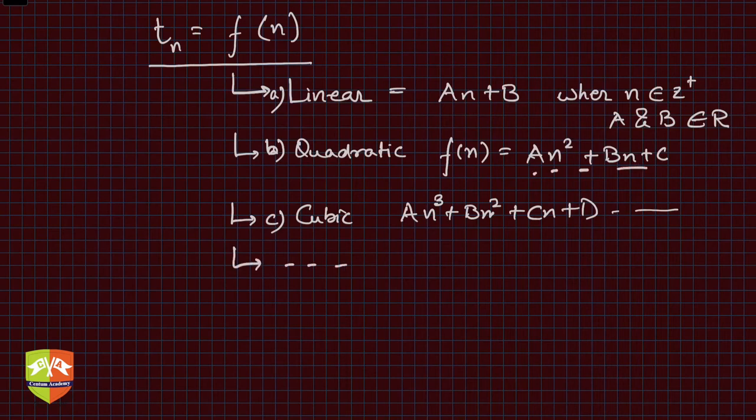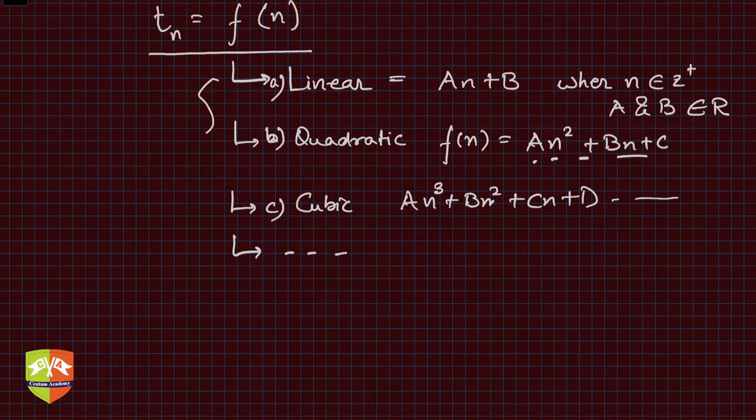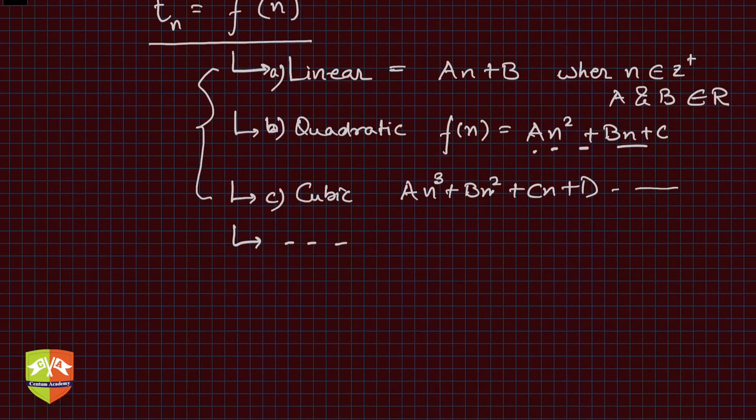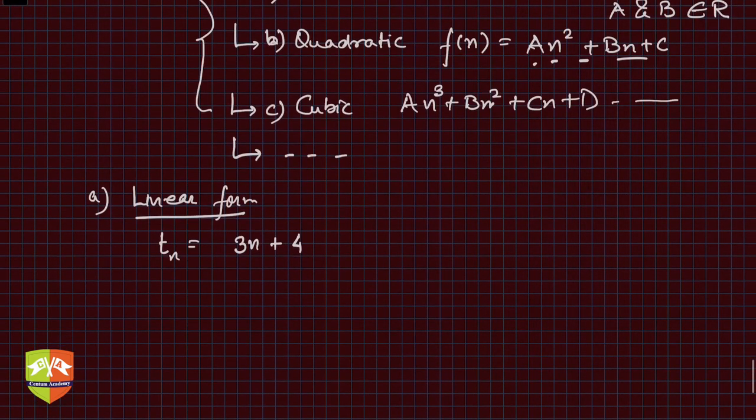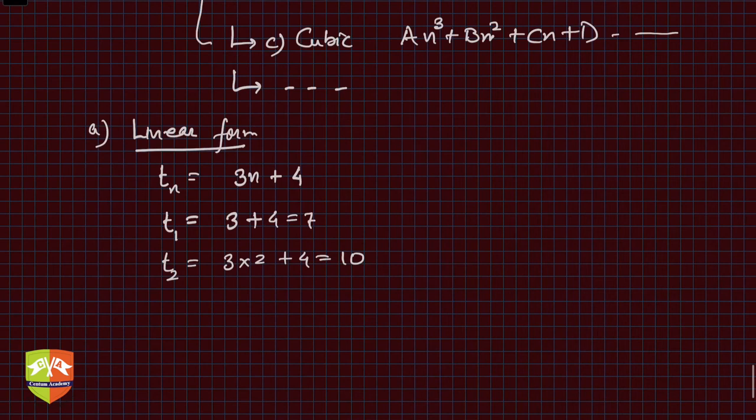Let's take up linear form. Say we have tn = 3n + 4. What will be t1? t1 will be 3 + 4, that is 7. t2 will be 3×2 + 4, that is 10. t3 will be 3×3 + 4, that is 13.